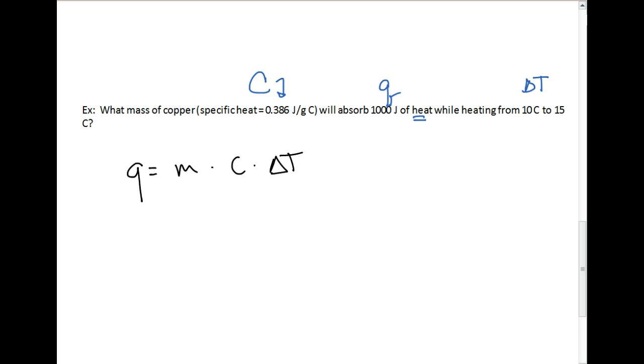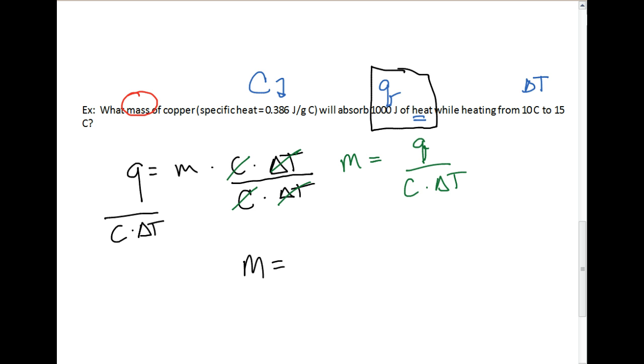We're being asked to solve for mass. What I like to do is take my equation and solve it for mass first. We're going to divide both sides by C delta T to rearrange this. The C delta T is going to cancel on this side, and we're left with a formula of mass equals heat over specific heat times change in temperature. Now we can just plug our values in. Mass equals heat, which was 1,000 joules, divided by the specific heat, 0.386 joules over grams times degrees Celsius, multiplied by our temperature change, 5 degrees Celsius.